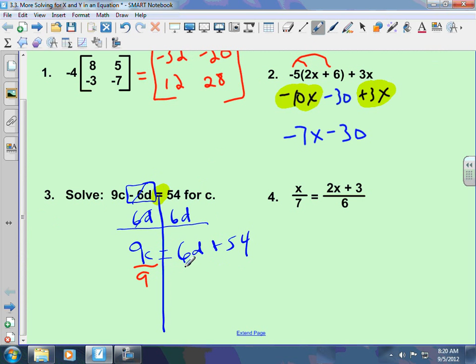So, you need to divide your number next to the letter to everything. Here, we're solving for c. So, I can do this. The 9s cancel. C equals 6d plus 54 over 9. You don't simplify unless you're putting it in slope-intercept form.